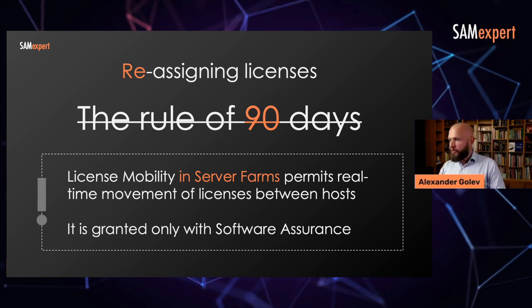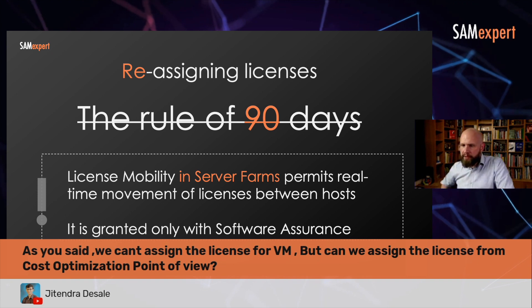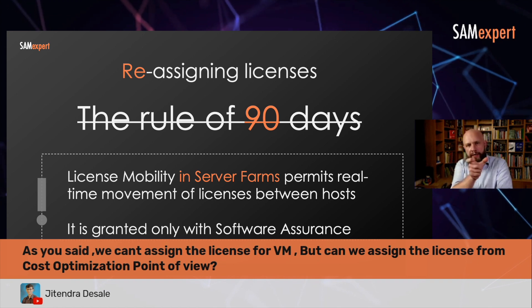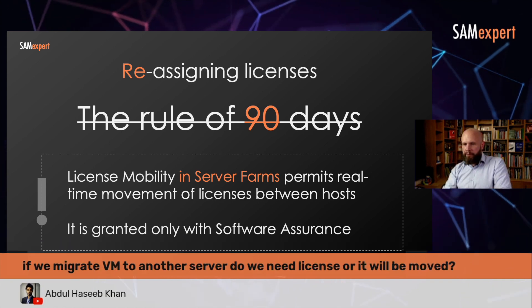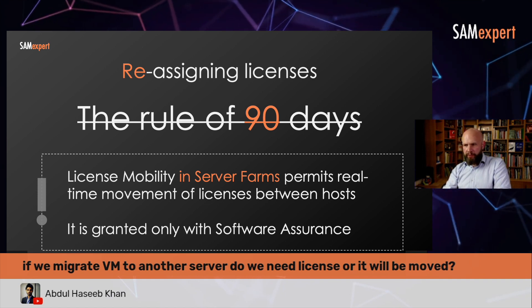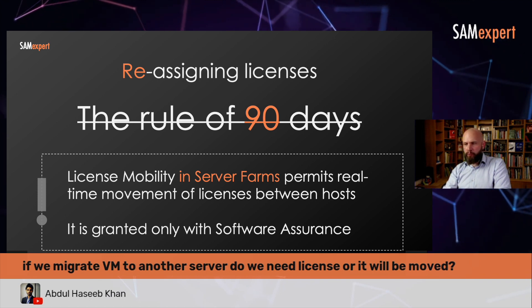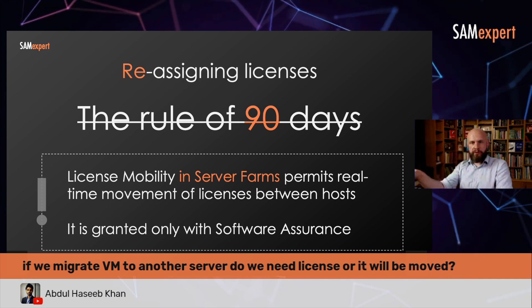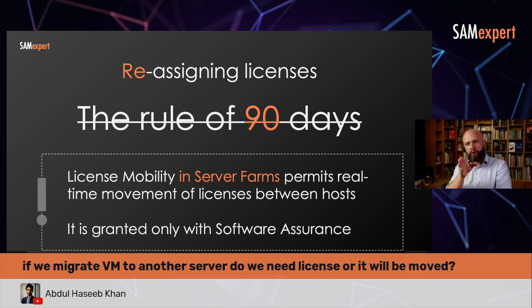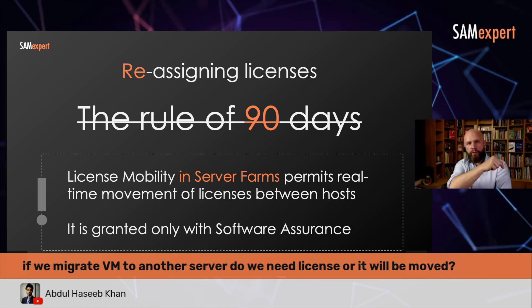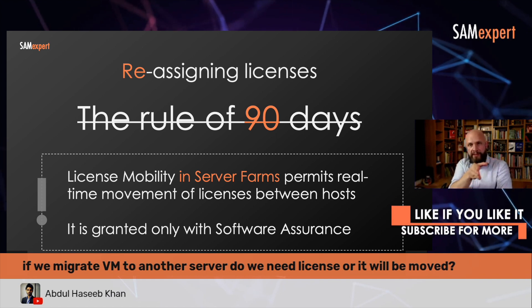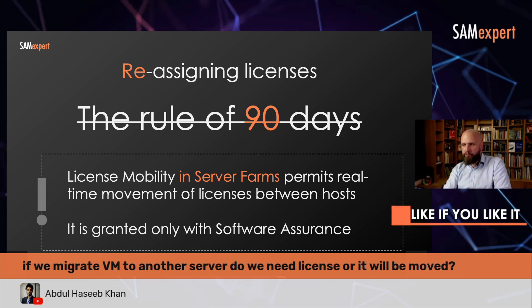I have lots of questions about virtualization. Someone asked: we can't assign a license to a VM, but can we assign a license from a cost optimization point of view? No — you cannot assign it to a virtual machine. You can calculate it for the VM, but you have to assign it to the host. Another question: if we migrate a VM to another server, do we need a new license or will it move? If you're decommissioning that server, that's probably one of those exceptional instances when you can move the license. But if you're just migrating from server to server, you need to move the license. The key question is: how long did that license stay on the initial server? If more than 90 days, yes you can move it. If less than 90 days, you must wait until the 90 days expire — or if you have Software Assurance, you can move it at any time.